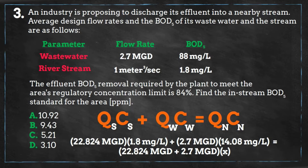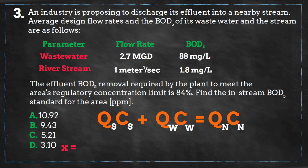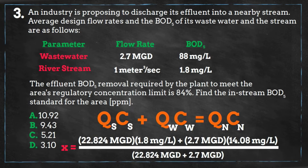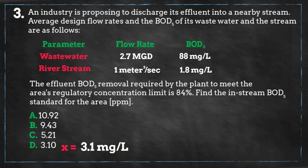Now we can solve for x. Solving this equation, we get x equals 3.1 milligrams per liter. Remember that 1 ppm is also equal to 1 milligram per liter, so our answer is D.